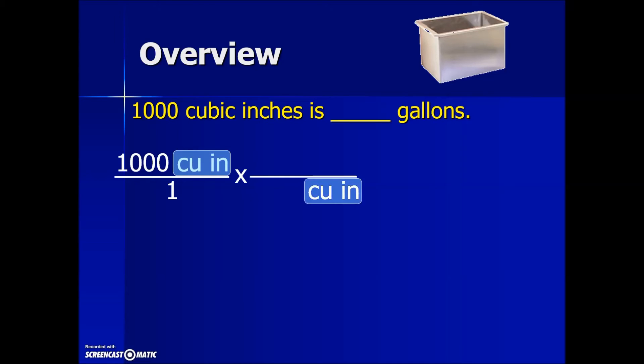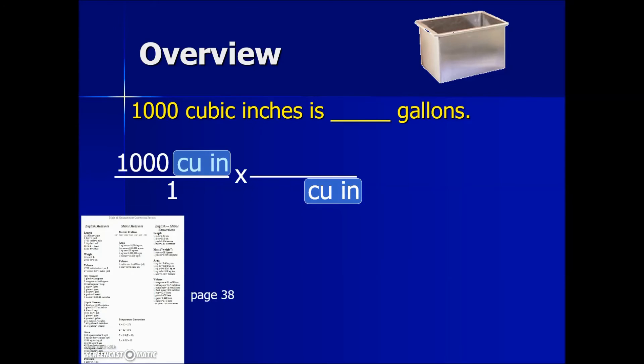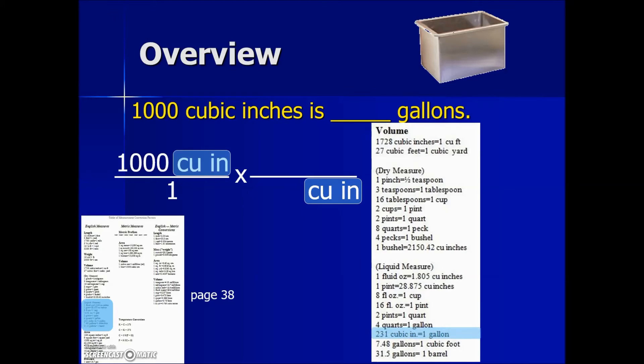So on your conversion table in your book on page 38 under the first column, the English measurement, and on the bottom half of that first column under liquid measurement, we identify that there are 231 cubic inches equal to 1 gallon. This will be the two conversion factors that we will use that will help us convert our cubic inches into gallons.